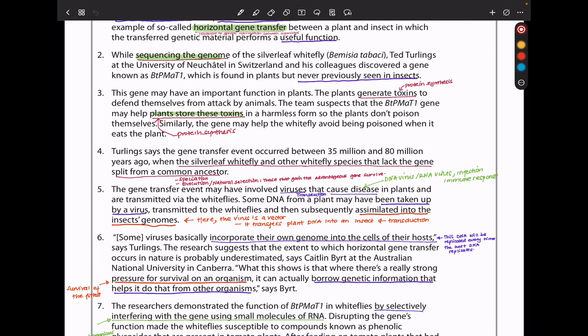Turlings says the gene transfer event occurred between 35 million to 80 million years ago when the silver leaf whitefly and other whitefly species that lack the gene split from a common ancestor. The gene transfer event may have involved viruses that cause disease in plants and are transmitted by the whiteflies. Some DNA from a plant may have been taken up by a virus, transmitted to the whiteflies, and then subsequently assimilated into the insect's genome.